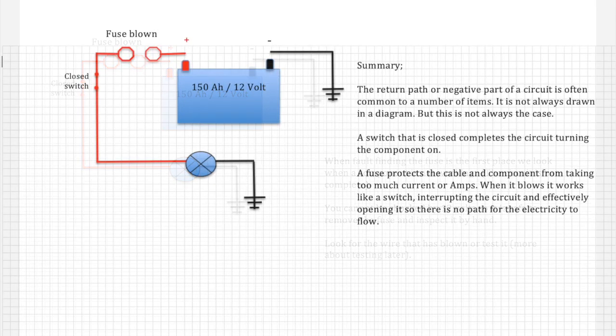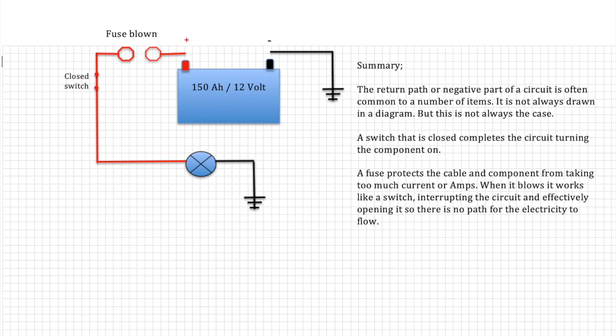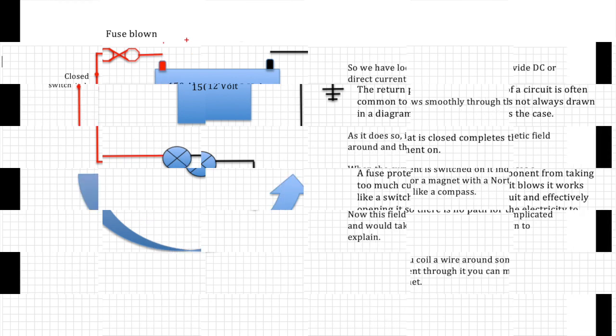So let's summarize what we have learned in this section. The return path, or negative part of a circuit, is often common to a number of items and is not always drawn in a diagram. But this is not always the case. A switch that is closed completes a circuit, turning on components. A fuse protects the cable and the components from taking too much current in amps. When it blows, it works like a switch, interrupting the circuit, effectively opening the circuit. And with no circuit, no work can be done.